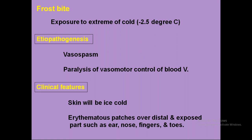Frostbite is exposure to still further low temperatures — extreme cold at minus 2.5 degrees centigrade, whereas trench foot occurs at 5 to 8 degrees centigrade. The pathogenesis of frostbite is vasospasm, whereas in trench foot the pathogenesis is vasoconstriction. Remember this vocabulary: trench foot involves vasoconstriction; frostbite involves vasospasm.